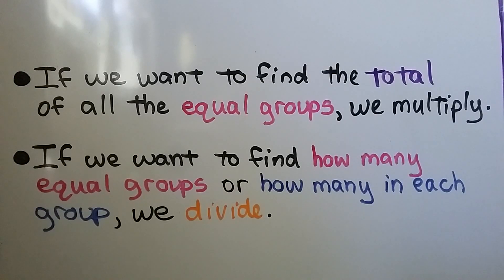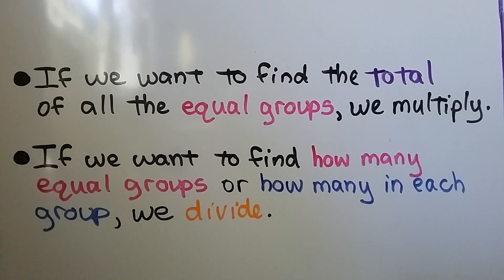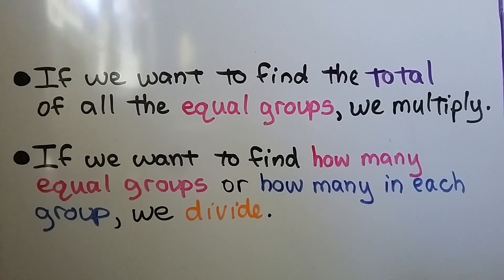If we want to find the total of all the equal groups, we multiply. If we want to find how many equal groups or how many are in each group, we divide.